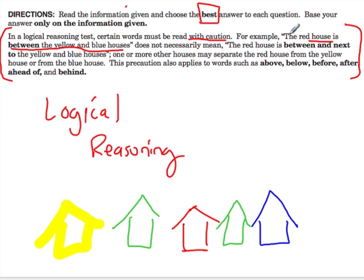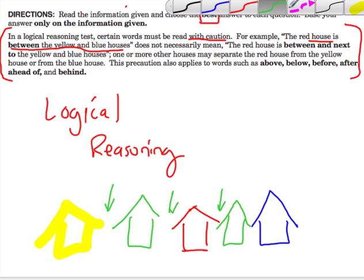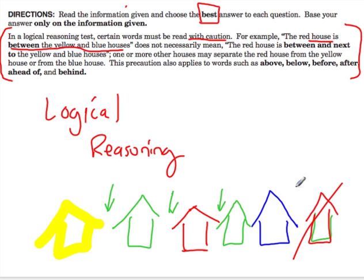But if they only say the red house is between the yellow and blue houses, you have no idea how many other houses may even be between them as well. We just know that the red house is not outside the blue house and yellow house. We know it's not over here. We know it's not over here. That doesn't make sense because that's not between blue and yellow. And also we know it's not over here. We know it's somewhere between.